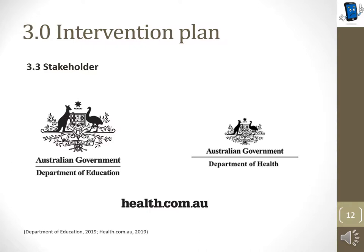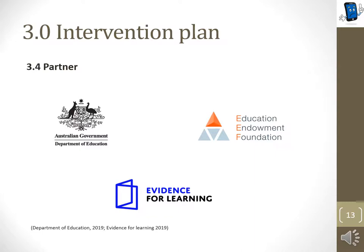Therefore, they cooperate with us and try to support the health of children. While the Department of Education is a stakeholder, it is also the most important partner for our intervention, providing important contributions on behalf of society. Evidence for Learning is an organisation that offers people an insight into how children can improve their learning and which methods will work best, so it is important to include them in planning the implementation. Another partner is the Education Endowment Foundation, which tries to increase the education of children and participates in our project to improve school performance by reducing screen time.